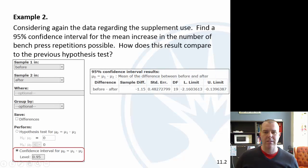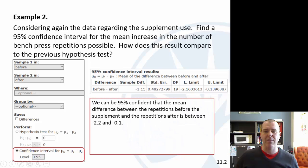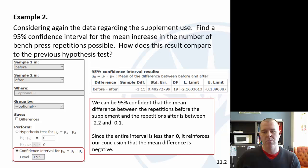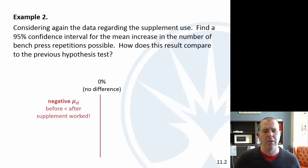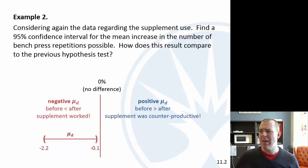We're 95% confident that the mean difference is between negative 2.2 and negative 0.1, which doesn't include 0. So we're 95% confident that we are negative there. What's interesting, it does reinforce our conclusion, but it's close, right? It's not like it's way different from 0. Let's take a little visual at this. 0% would be that there's no difference. Negative would be that the supplement worked because the before was less than the after. Positive would be that the supplement was counterproductive. We have our mean difference here.